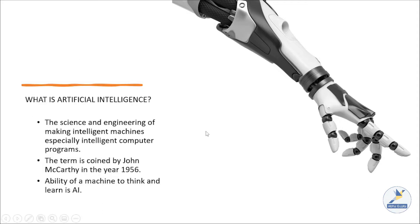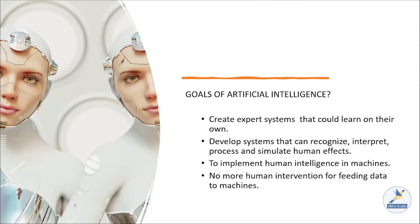Some examples around us are Siri, Alexa, chatbots, and AI-based algorithms that predict and give suggestions. We will talk about all these things in the upcoming slides. The main goal of artificial intelligence is to create an expert system which can learn, behave, think, advise, and explain, and demonstrate like humans.